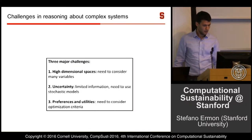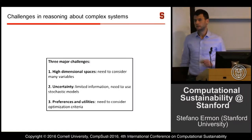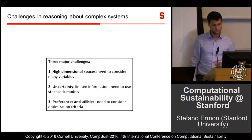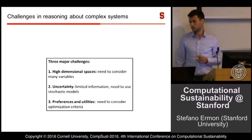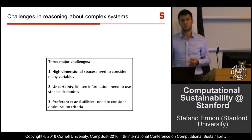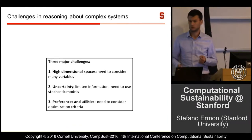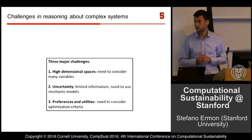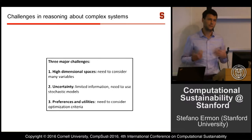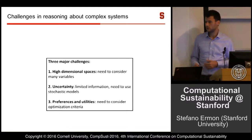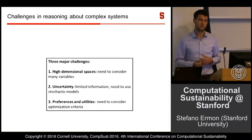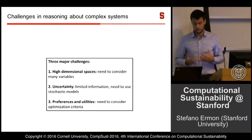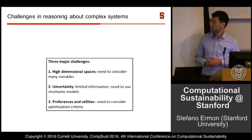I'll start by telling you about the computational themes common to problems we work on in my group. When we try to build models of real-world systems or data sets to make predictions about the future or support analytic decision-making, we typically encounter three major sources of difficulty. The first is that real-world systems are very complex — lots of variables and features — leading to very high-dimensional spaces.